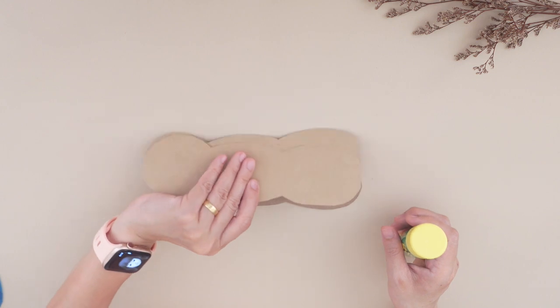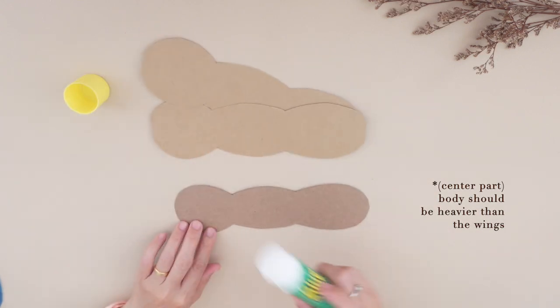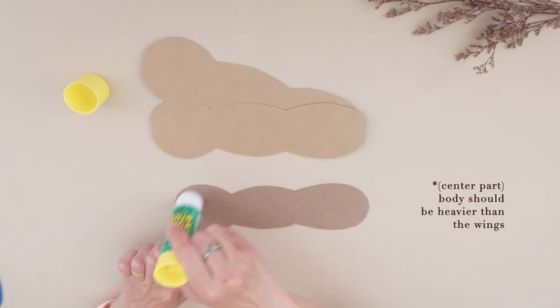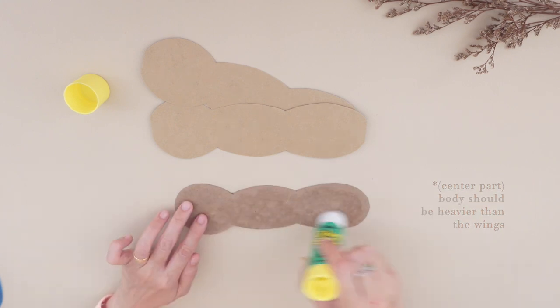Then take the three body cutouts and stick them together to make the flappy wings work. We need the center body to be heavier than the wings.